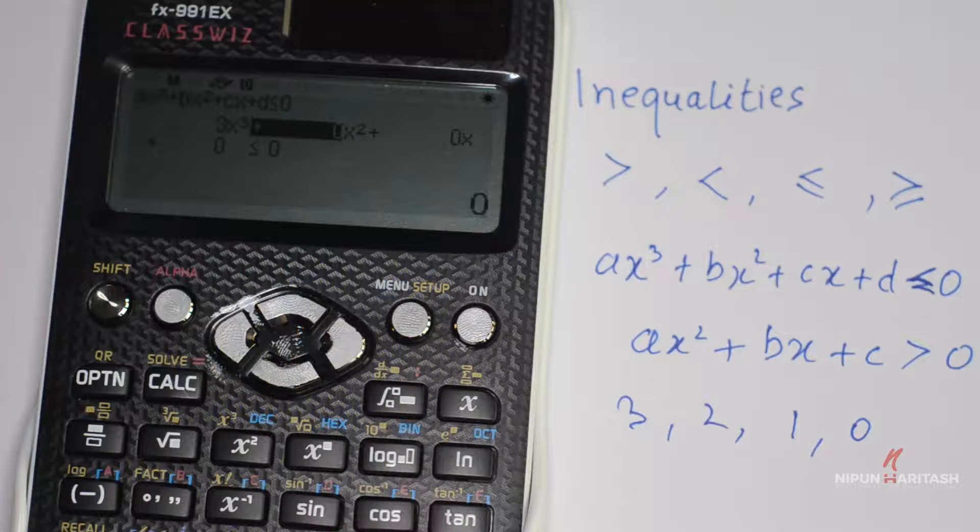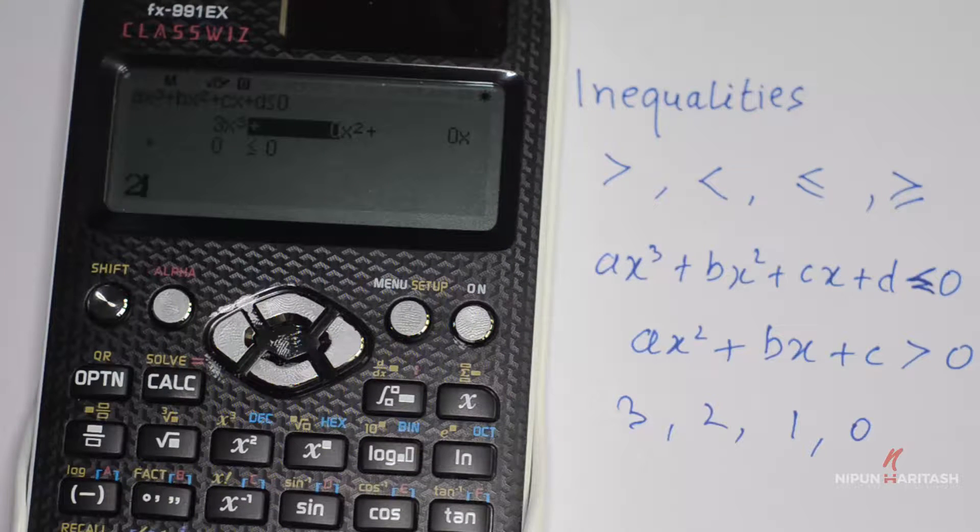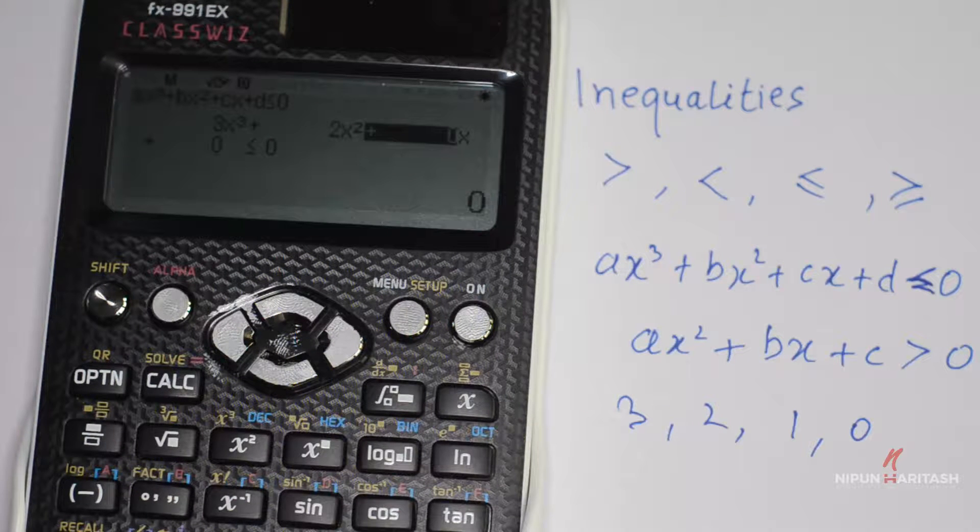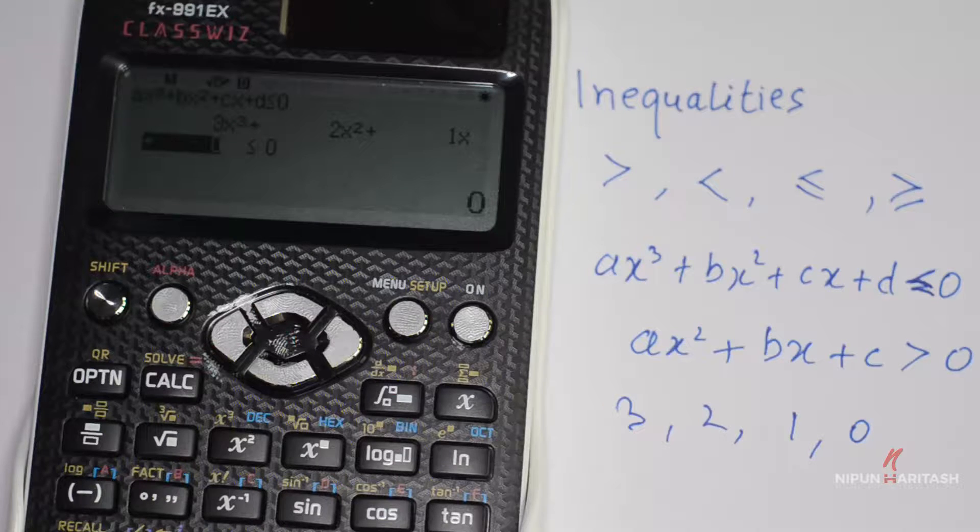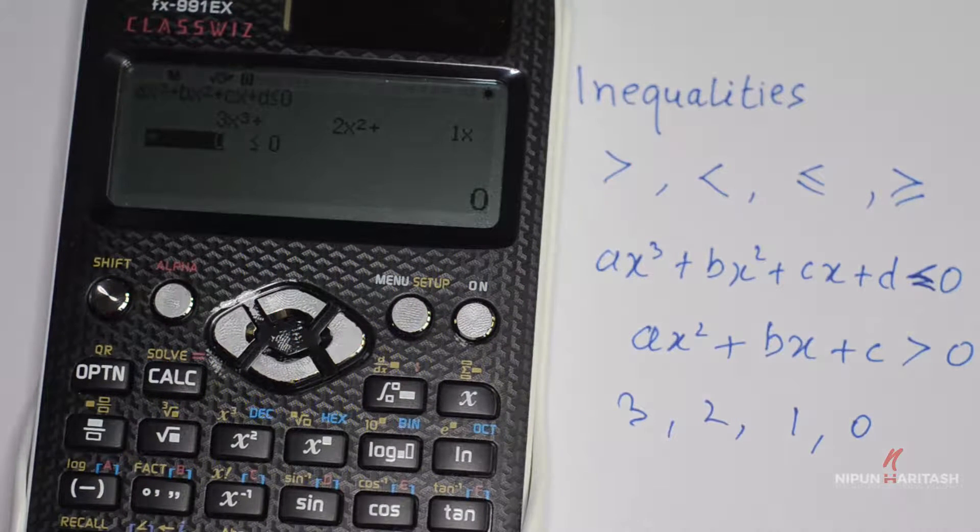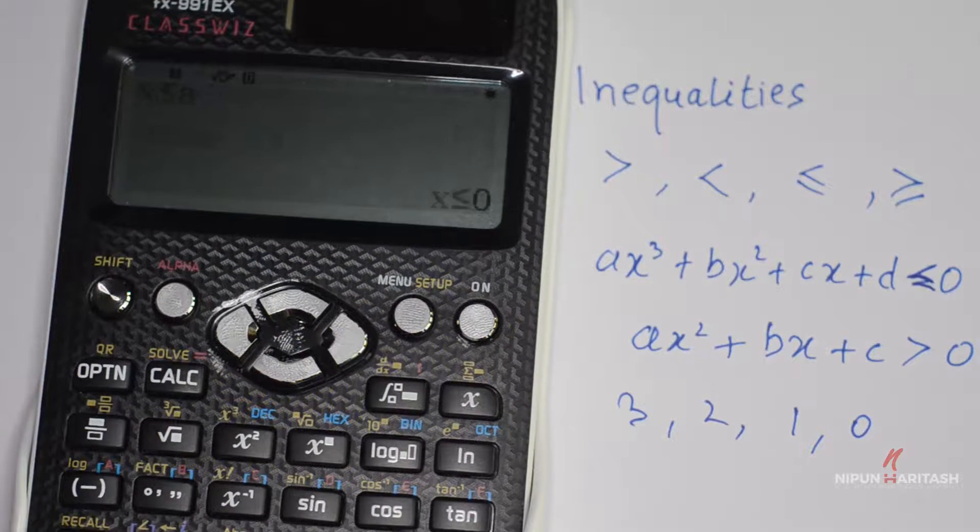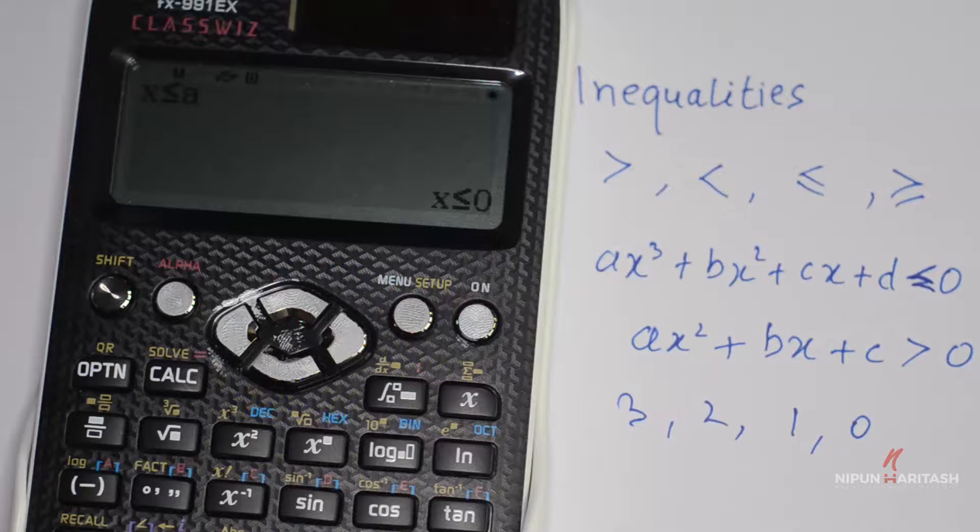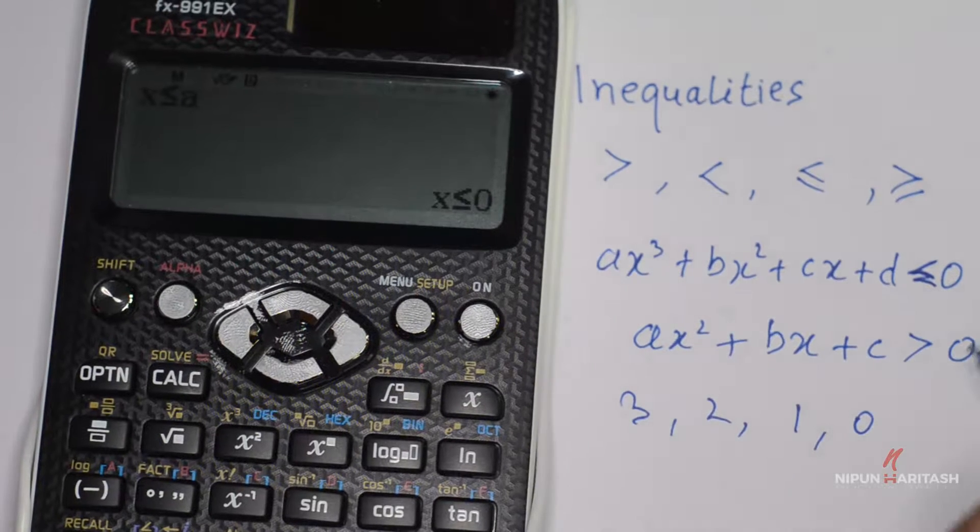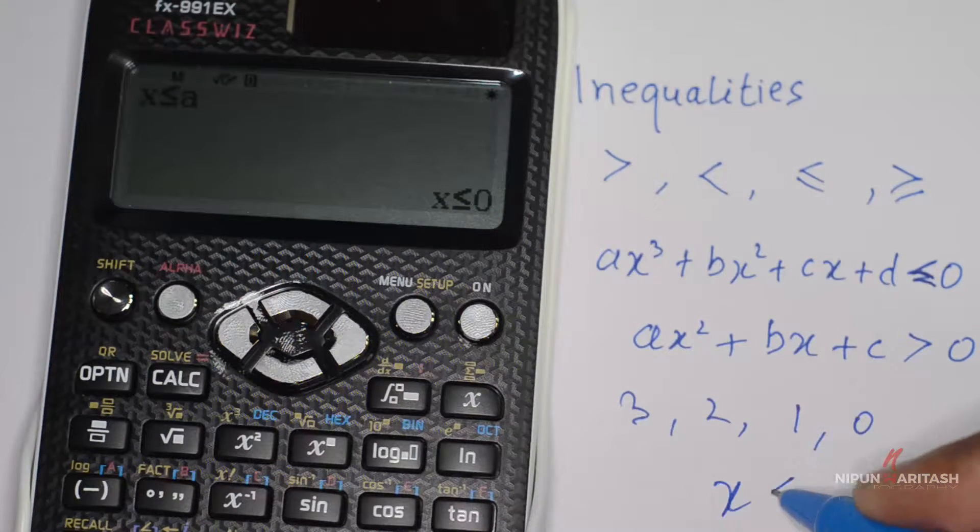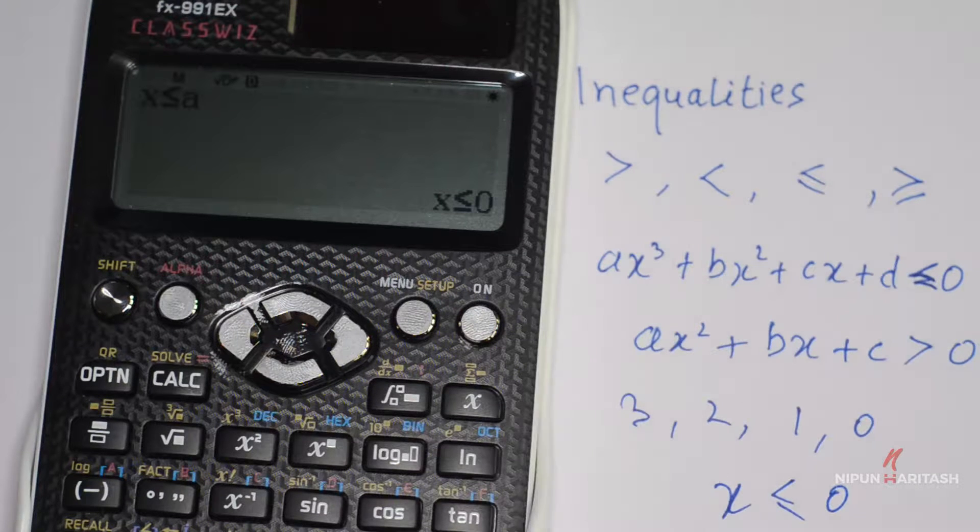Then you can press 2, then equal, 1 and equal, 0 and equal. And finally, when you press equal, it says the answer is x ≤ 0. This satisfies the condition.